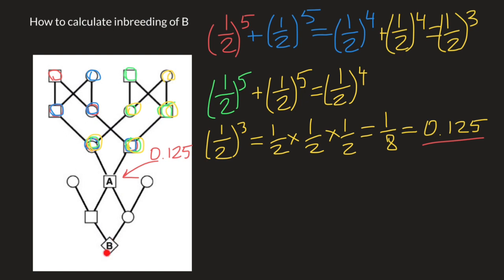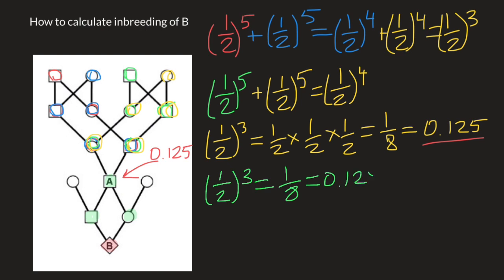Now let's find how individual B is inbred. We have a loop here, with individual B at one end. How many nodes does this loop have? One, two, and three — so it is one-half to the power of three, which is one-eighth, or 0.125.